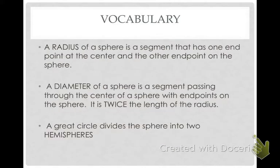The radius of a sphere is a segment that has one end at a point at the center of the sphere, and the other point is on the sphere. And the diameter of a sphere is a segment passing through the center of the sphere with its endpoints on the sphere. It's exactly twice the length of the radius of the sphere.